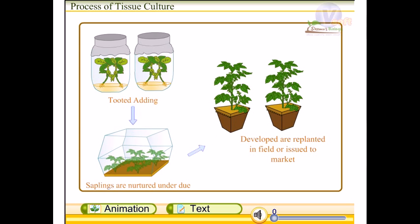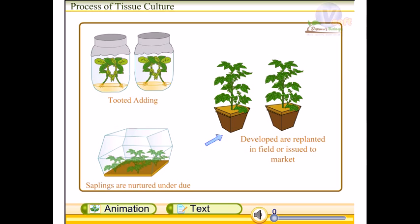A greenhouse is used at this stage. Finally, the saplings developed are replanted in the field for use in tissue culture.